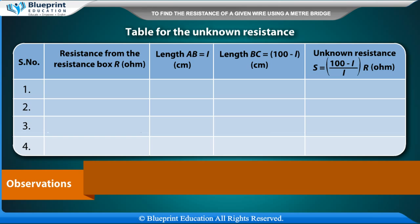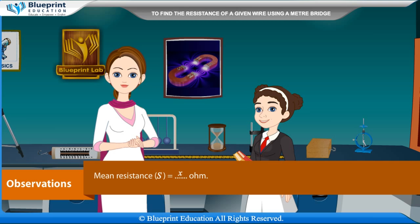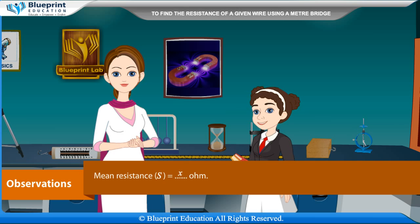Observations: Length of the wire L = X cm. Table for the unknown resistance — columns: serial number, resistance from resistance box R (ohm), length AB = L (cm), length BC = (100−L) cm, unknown resistance S = [(100−L)/L] × R (ohm). Mean resistance S = X ohm.